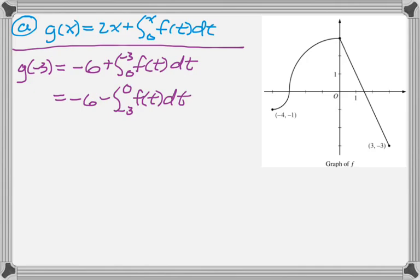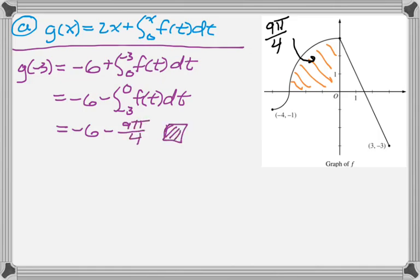So what I need to do is I need to calculate the definite integral from negative 3 to 0. But I'm told that's just a quarter of a circle, a circle that has a radius of 3. So 9 pi would be the whole thing and then 9 pi over 4 is the quarter. So this evaluates to negative 6 minus 9 pi over 4. And that's all there is to do for that part.